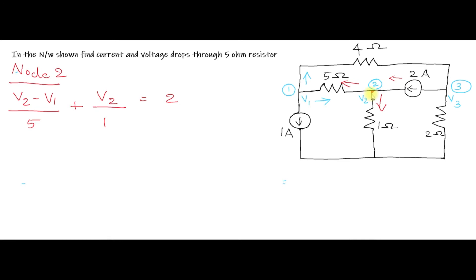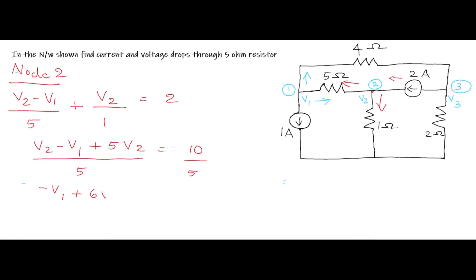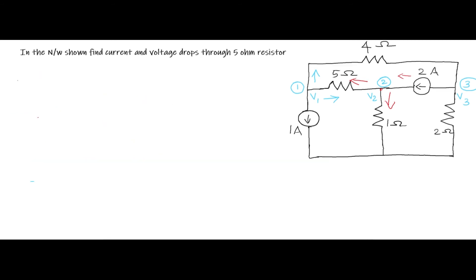Since these two currents are leaving and this current is coming towards the nodal point, you can take it as equal to 2. Your LCM is 5, so V2 minus V1 plus 5V2 divided by 5 equals 2. Simplifying: minus V1 plus 6V2 divided by 5 equals 2, which gives minus 0.2V1 plus 1.2V2 equals 2. Name this as Equation 2.